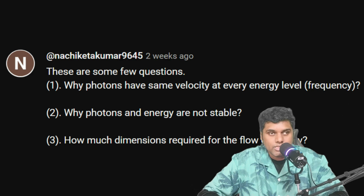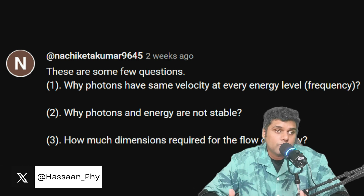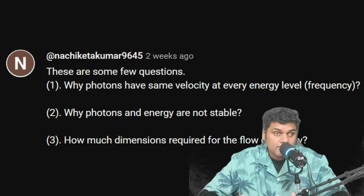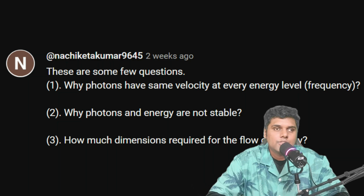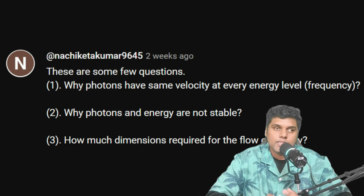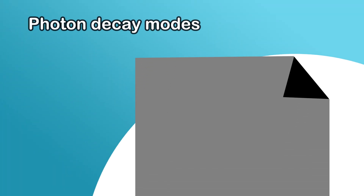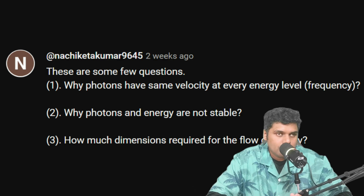In special relativity, any massless object should have the same speed — the speed of light. Since photons are massless, their speed is the speed of light, but their energy still increases as their momentum increases. Regarding why photons and energy are not stable — photons are actually very stable. There is no decay mode by which they decay rapidly, so photons are pretty stable particles.